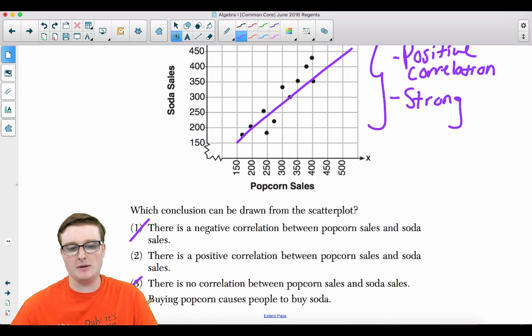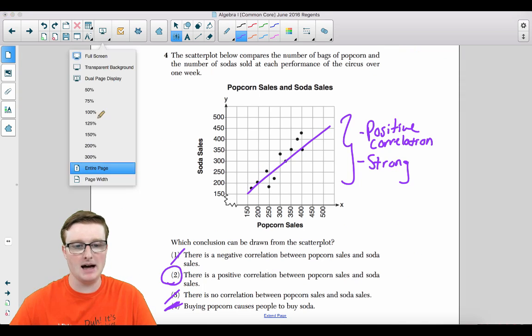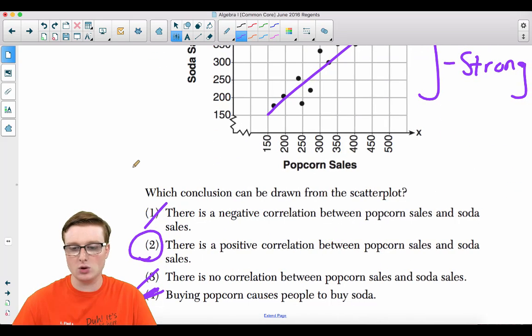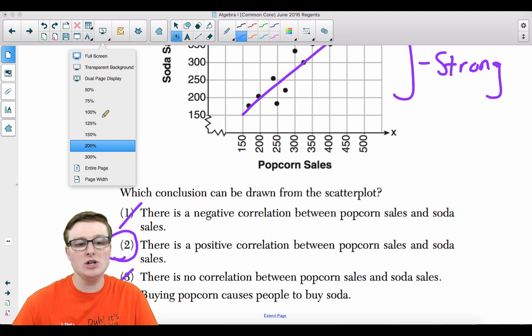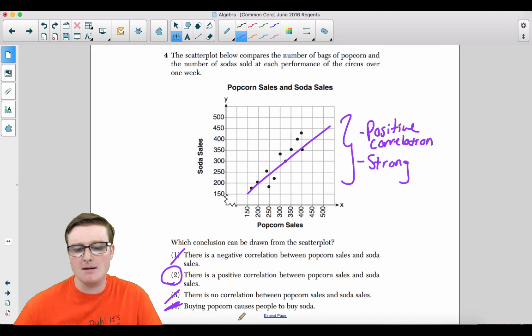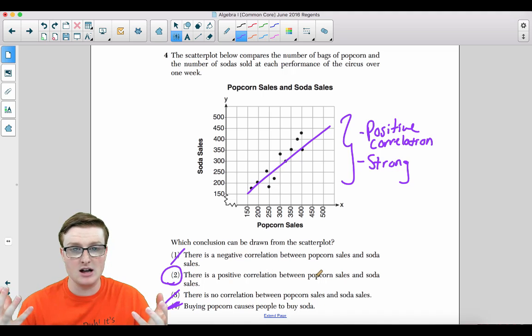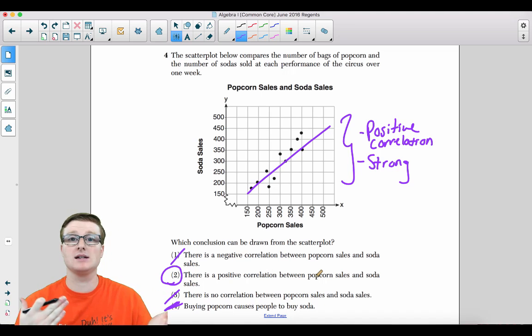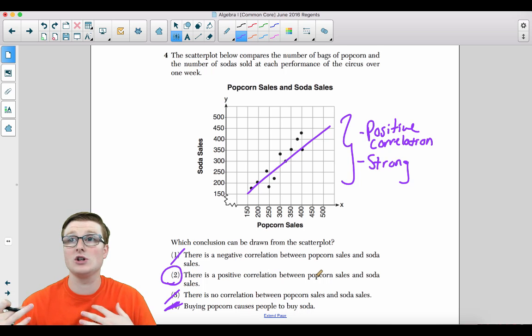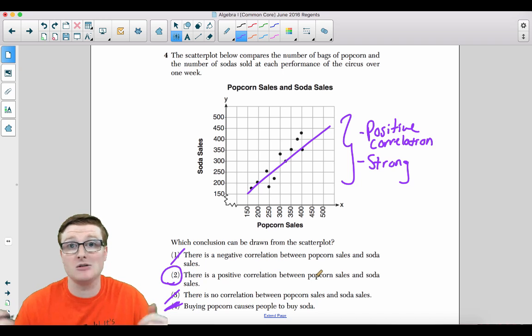Now this was the tricky part. Buying popcorn causes people to buy soda. Not necessarily. That can't be drawn from this scatter plot. The answer is choice two. There is a positive correlation between popcorn sales and soda sales. Yes, absolutely. Do we know why? No, not really. But buying popcorn causes people to buy soda, not necessarily. You could have people drinking because it is hot in the circus, or you could have people eating popcorn because they're hungry. You really don't know the reason, but the answer is definitely choice two.